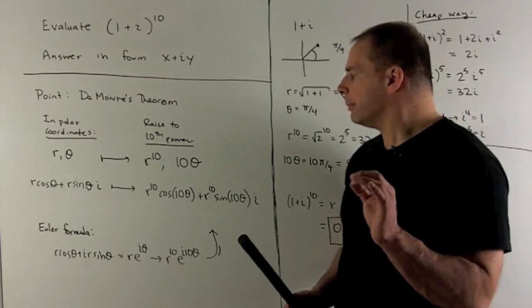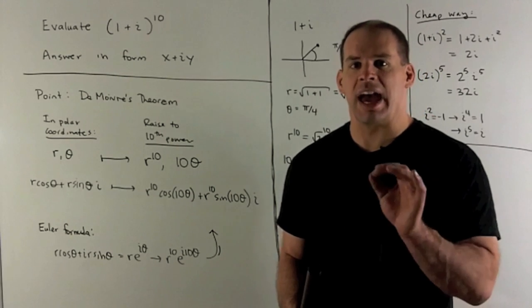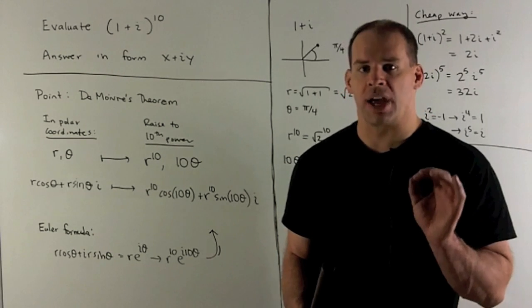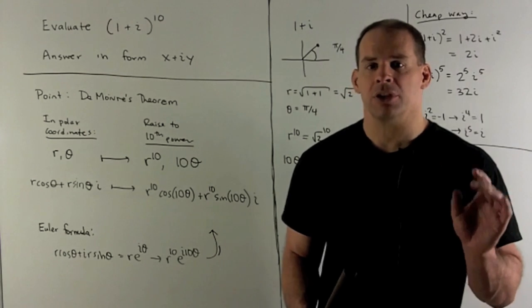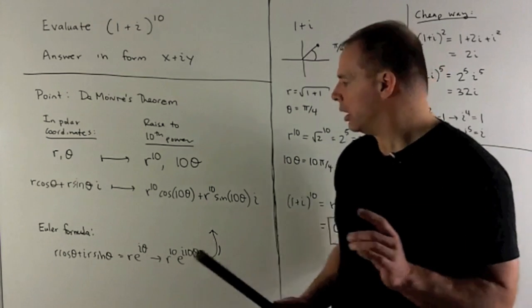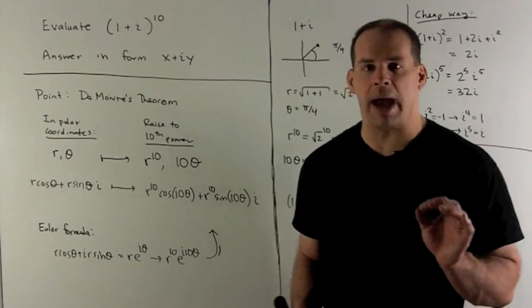Okay, so where does this come from? This is going to come from the Euler formula. That says e to the i theta equals cosine theta plus i sine theta. So when I raise to the 10th power, we're taking r to the 10th power, e to the i theta to the 10th power.